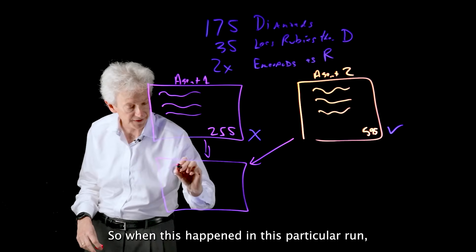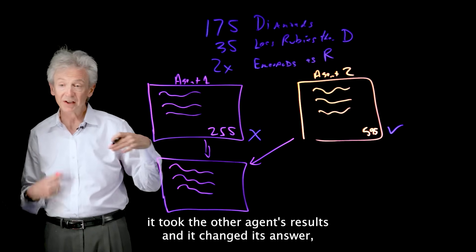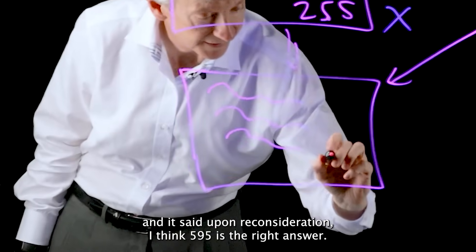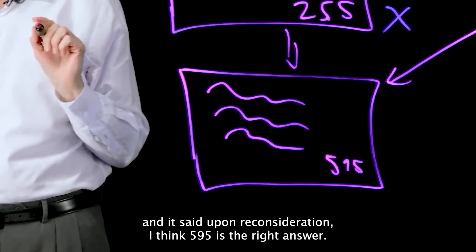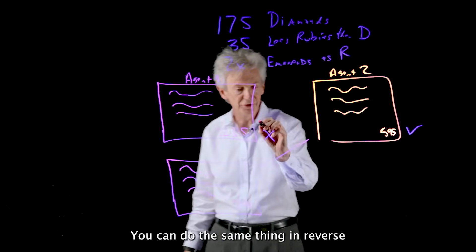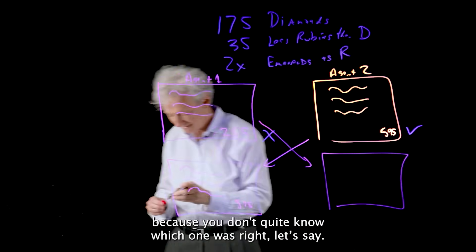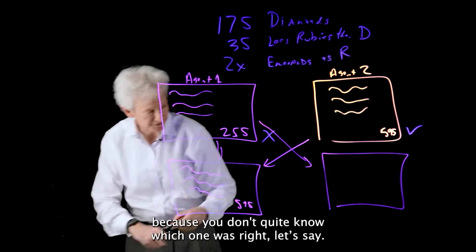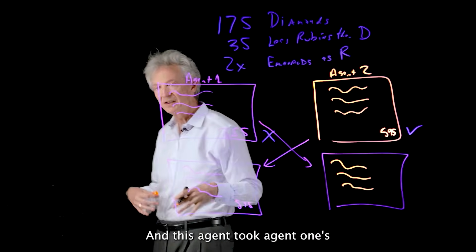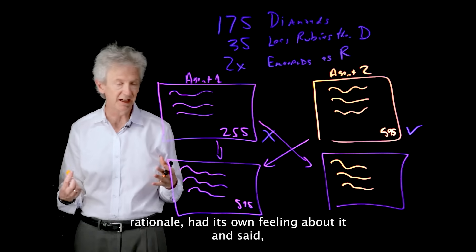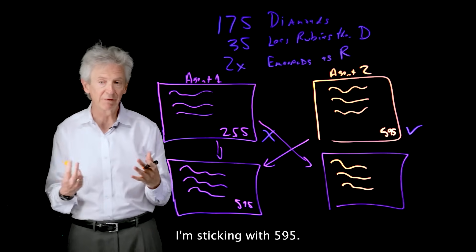So when this happened in this particular run, it took the other agent's results and it changed its answer. And it said, upon reconsideration, I think 595 is the right answer. You can do the same thing in reverse because you don't quite know which one was right. And this agent took agent one's rationale, had its own feeling about it and said, I'm sticking with 595.